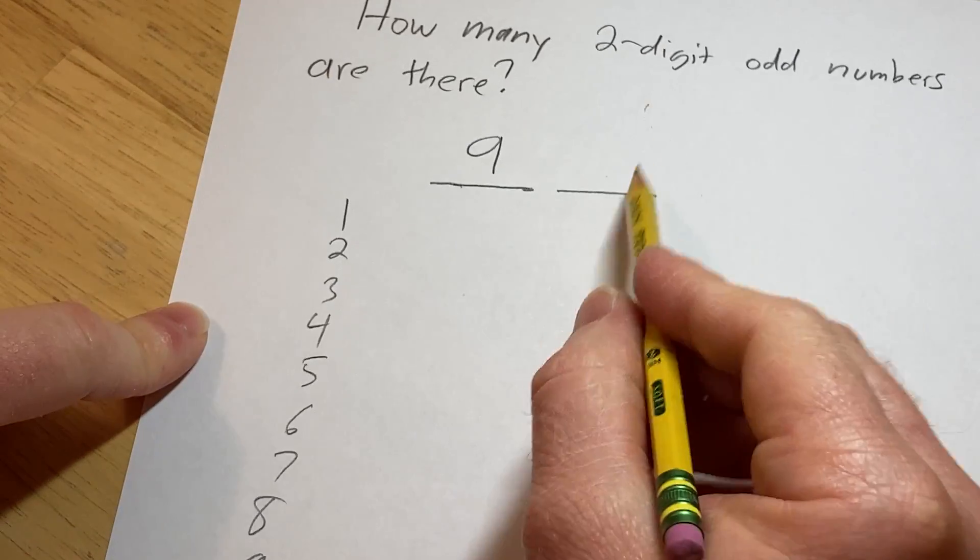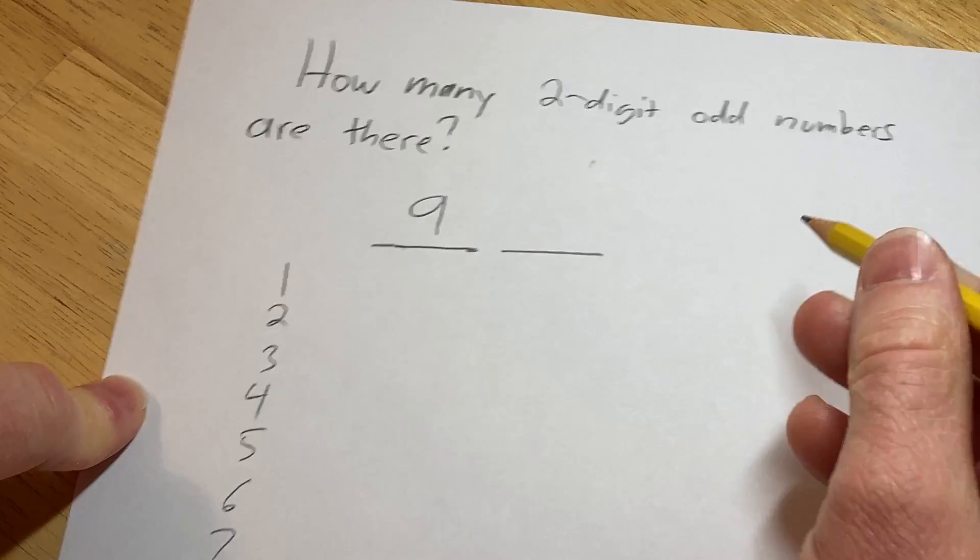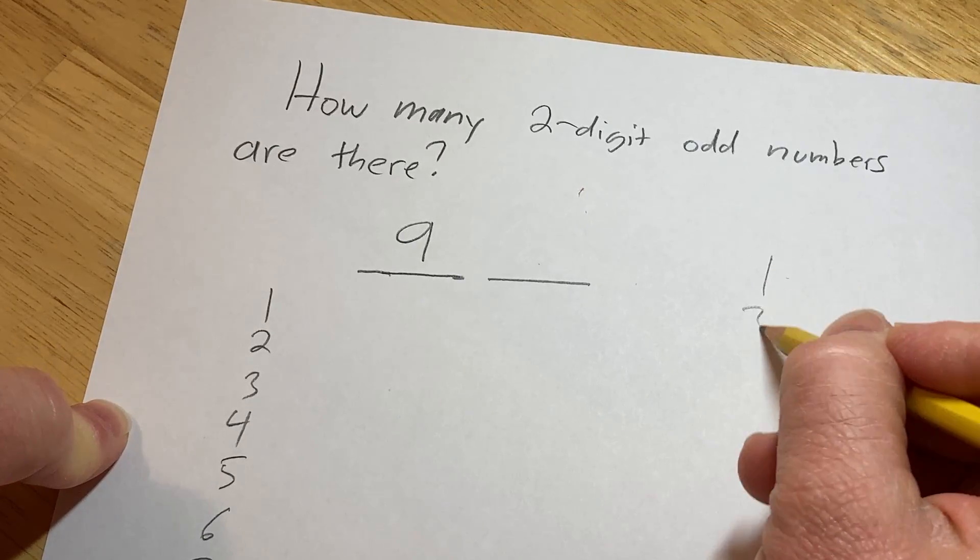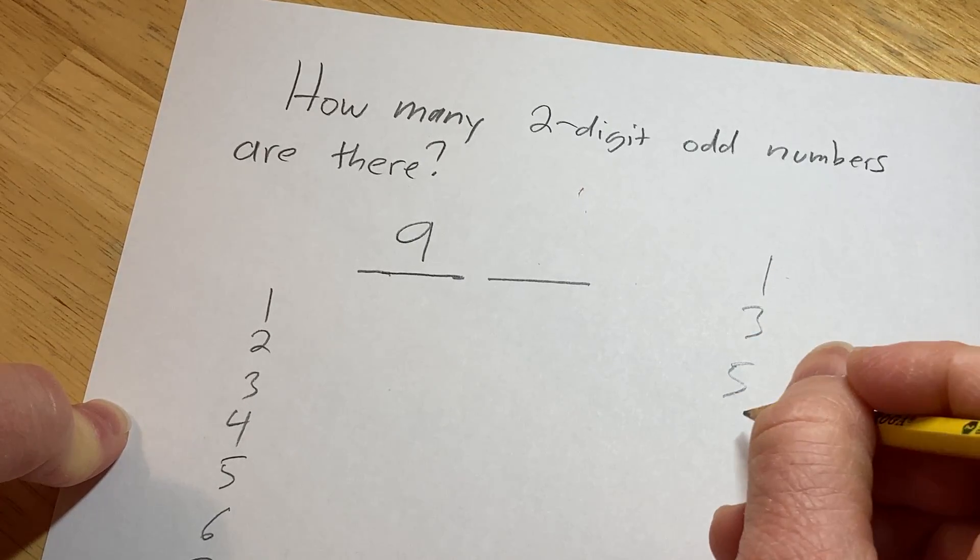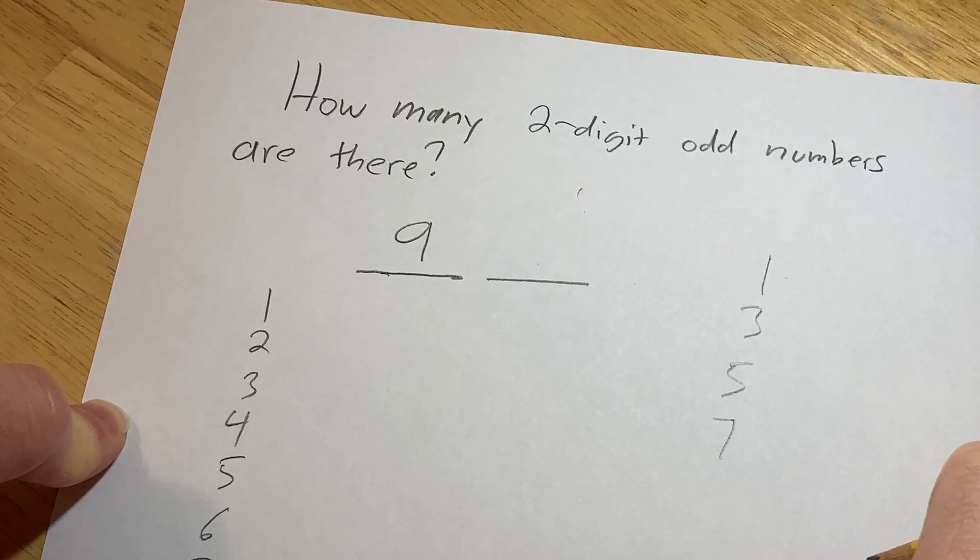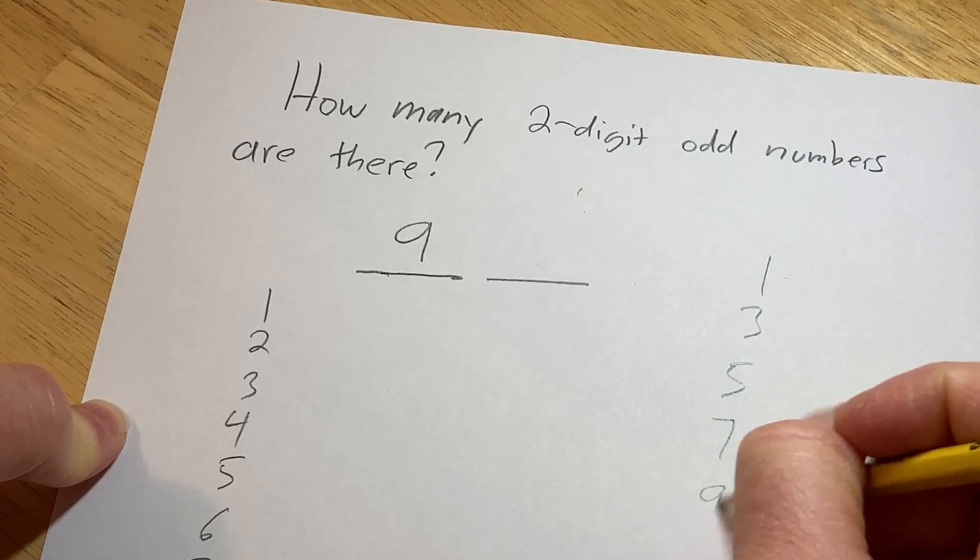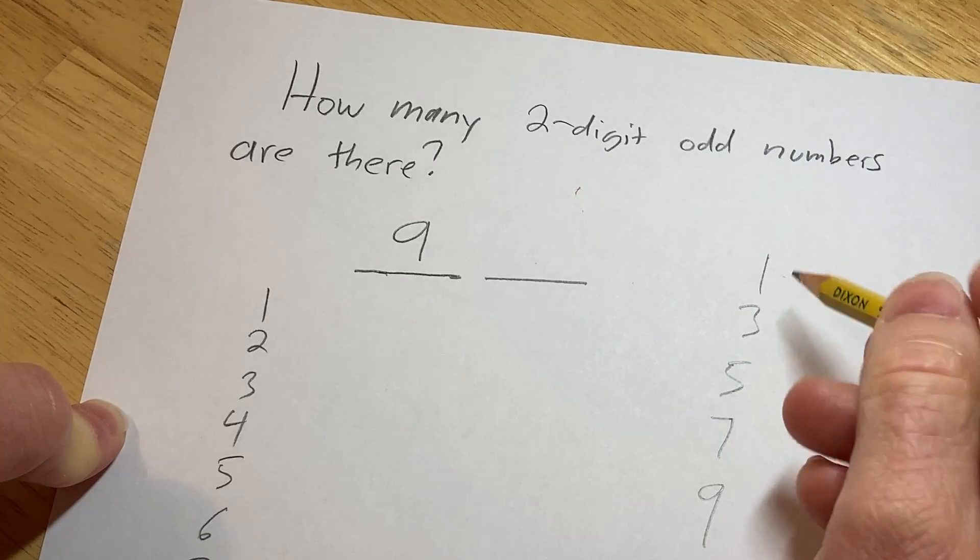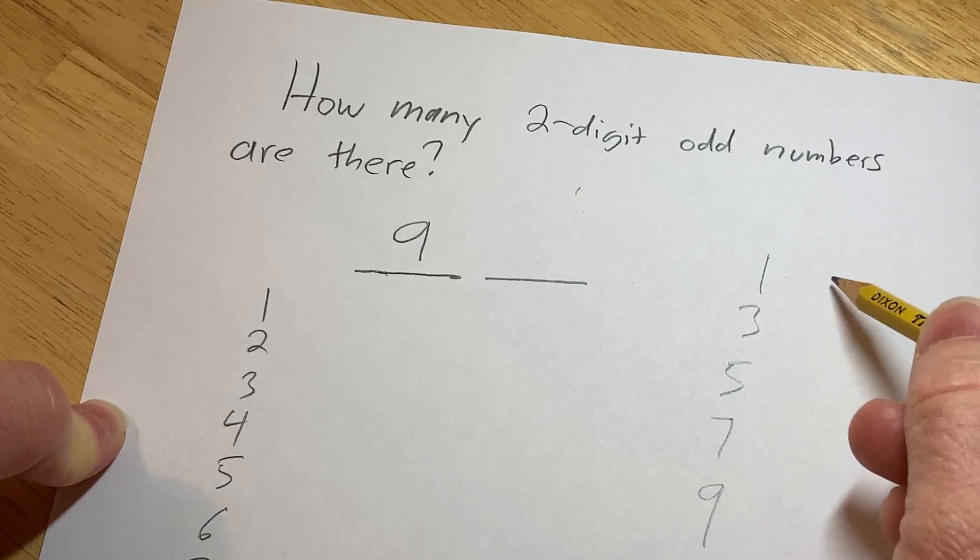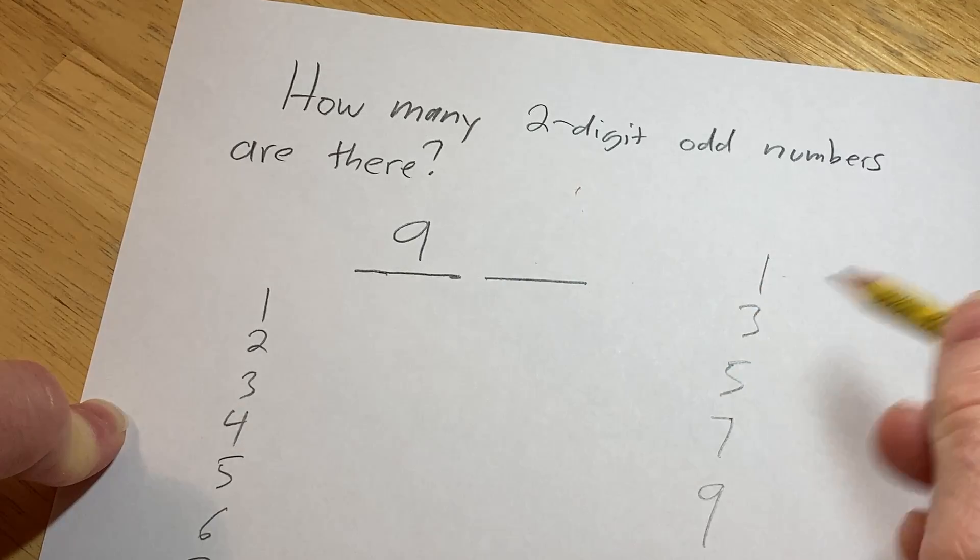If we want to make sure the number is odd, it has to end in 1, 3, 5, 7, or 9. Those are the only choices because it can't end in 0, 2, 4, 6, or 8, since then it would be even.